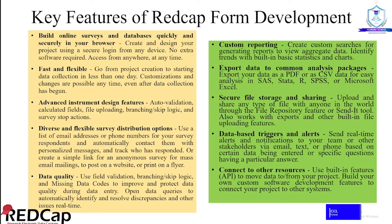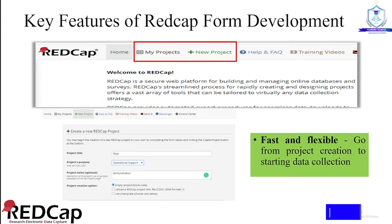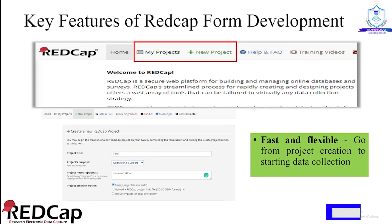You can also build your own custom software development features to connect your project to other systems. To start making a REDCap form, you need to first create a new project. Once you create a new project, you need to define its title, the purpose, and also provide the project notes — this is optional but it is useful information. REDCap offers a fast and flexible way to create forms and projects, and you can be able to start data collection within the same day.